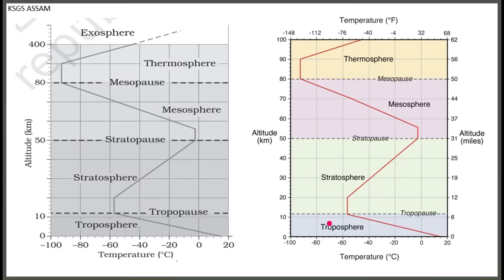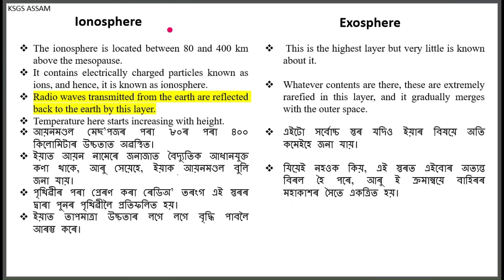The troposphere extends to 50 km, the stratosphere extends to 80 km, and the Mesosphere extends to 400 km. The thermosphere extends to 80 km. Now let's look at the variation and graph. The third layer is the ionosphere and thermosphere.